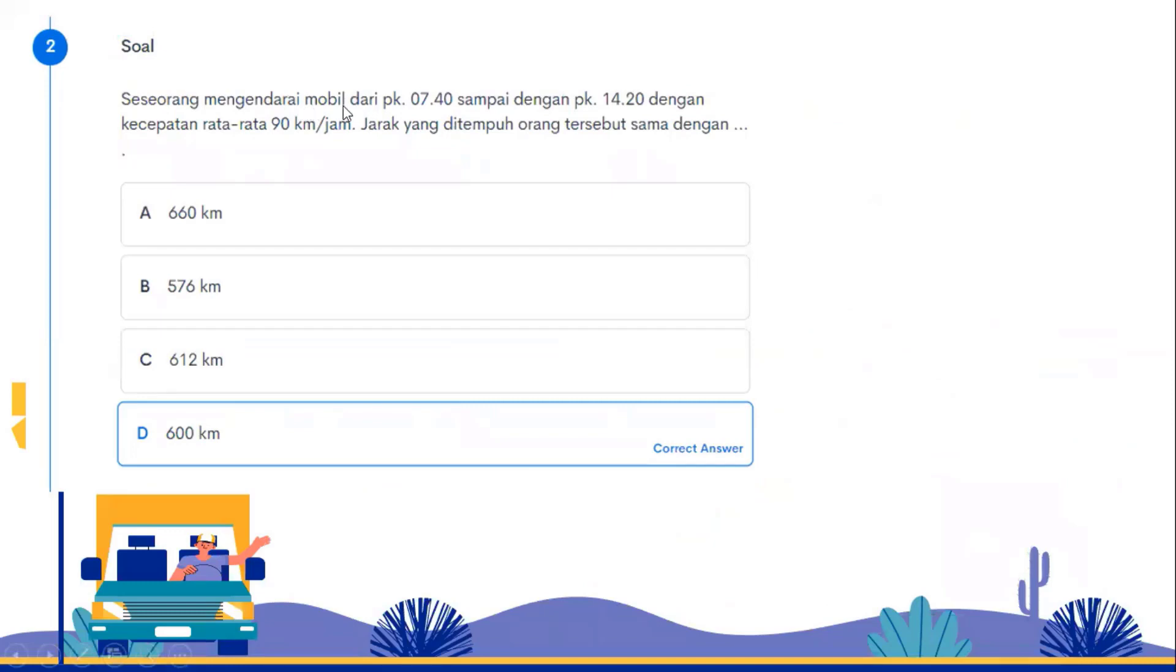Someone drives a car from 7:40 until 14:20 with an average speed of 90 km per hour. The distance traveled is T0 equals 7:40, which is the initial time. T1 is the final time, 14:20. The average speed equals 90 km per hour. What is being asked is the distance S. This is a GLB problem. For GLB problems, the formula is V equals S over T. V is velocity.